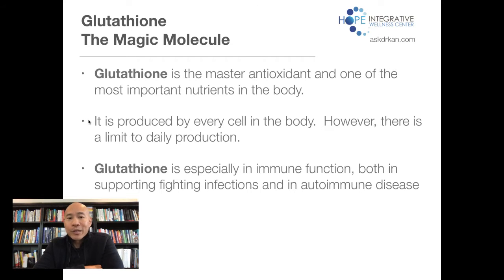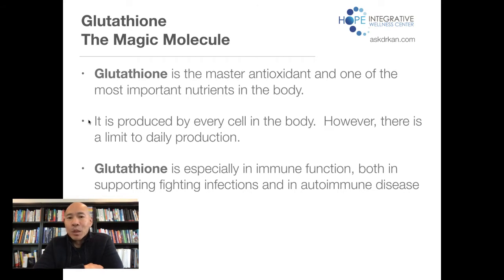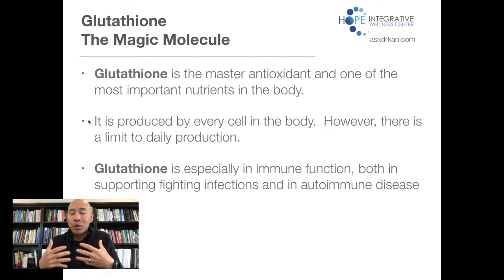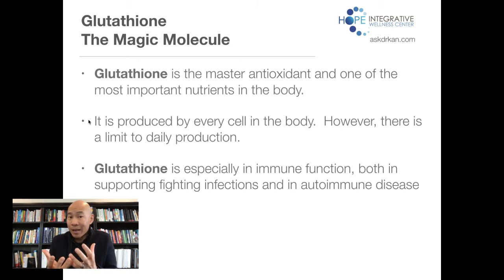It is produced by every single cell in the body. However, there's a daily limit — meaning you only make so much in a day. It's not an infinite, unlimited supply. So when you run out, your body gets hit. Think of glutathione as a bulletproof vest. It's there to protect your cell. So when you have some kind of infection or inflammation, that inflammation is going to damage the cell. The glutathione is a bulletproof vest that takes a hit instead of the cell.